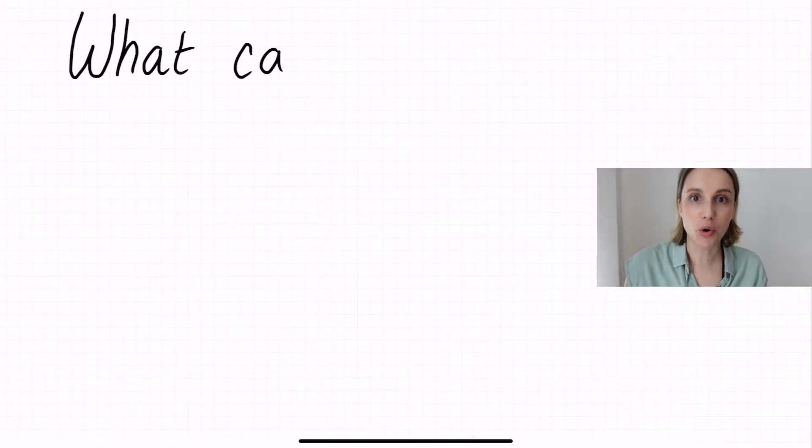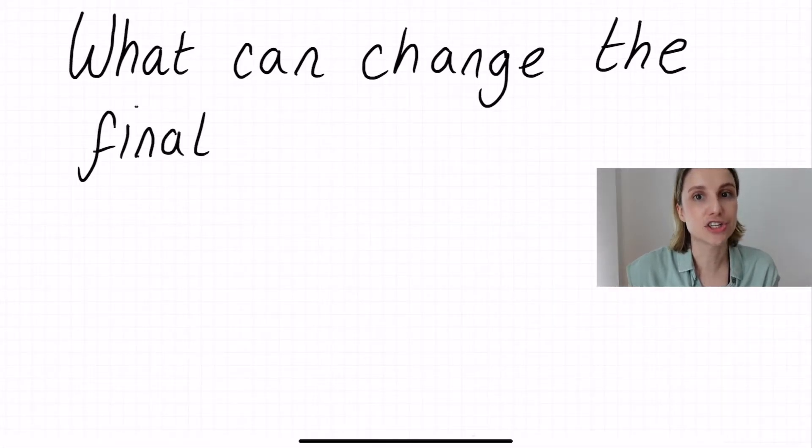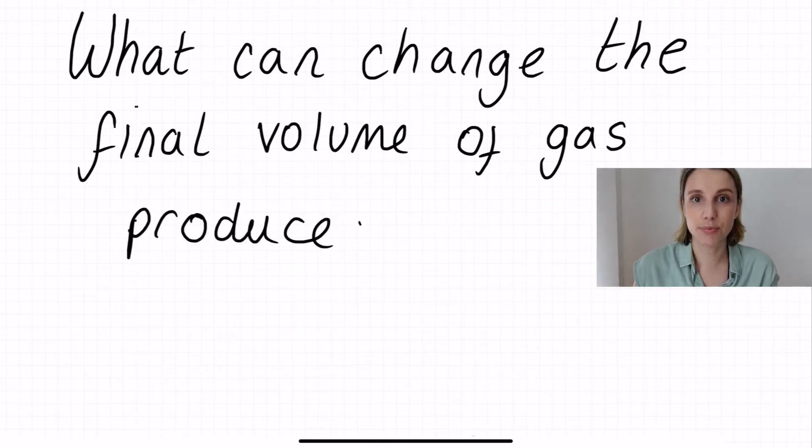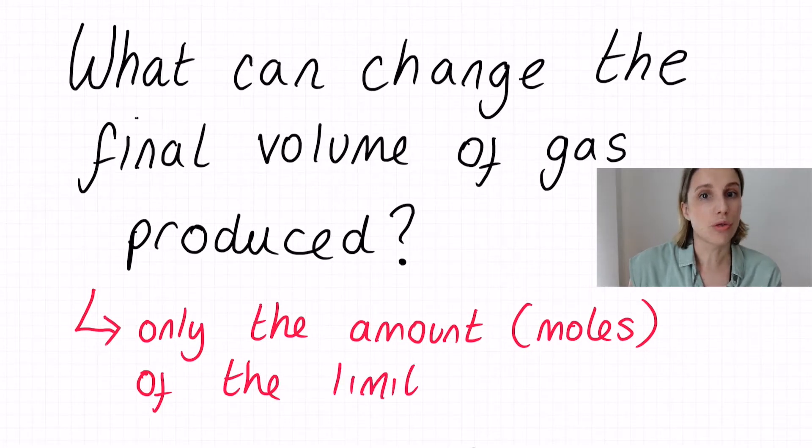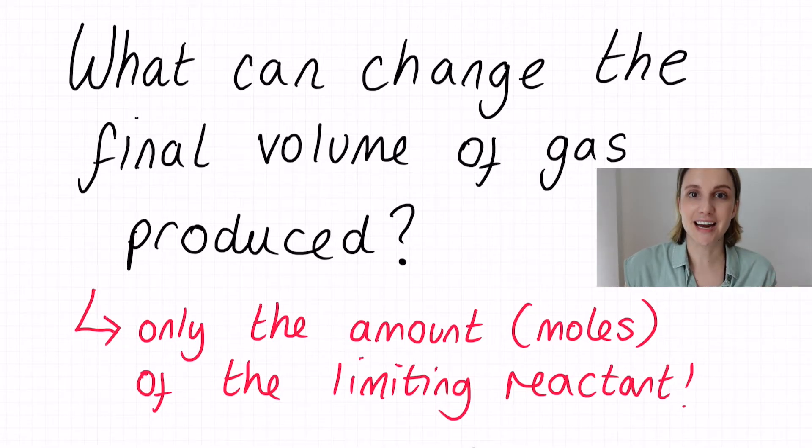So at this point, you're probably wondering what could change the total volume of carbon dioxide produced in this reaction. And the truth is there's only one thing, which is the amount or the moles of the limiting reagent. And by that, I mean the reagent that's likely to run out first in the reaction.